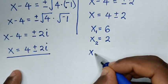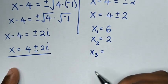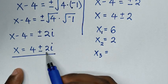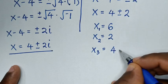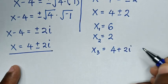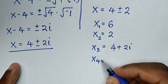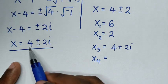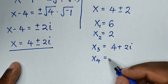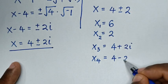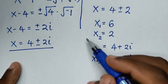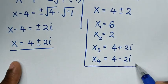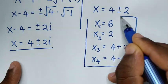So the four values of x are: x equals 6, x equals 2 (the real solutions), x equals 4 plus 2i, and x equals 4 minus 2i (the complex solutions). These are all four values of x for this problem.